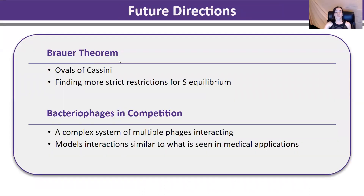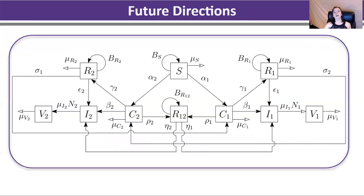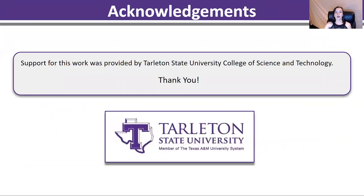Moving forward, I've used Broward's theorem to find ovals of Cassini to find more strict restrictions on the S-equilibrium, and I'd also like to model a bacteriophage in competition, which shows a complex system of phage interaction. This will help us get closer to what we see in medical applications, but it creates a massive Jacobian, and I'm currently working on evaluating this. Thank you, and I hope you have a great day.